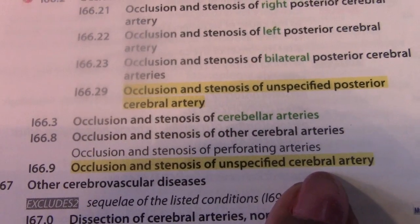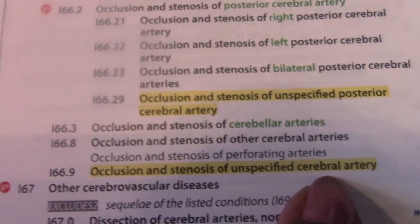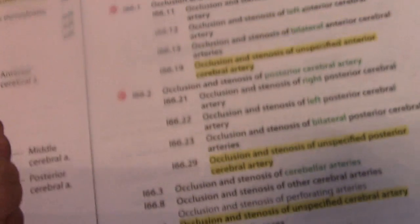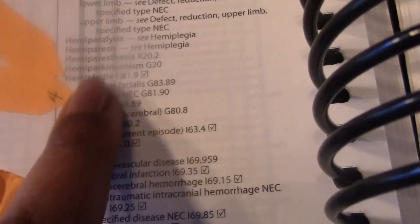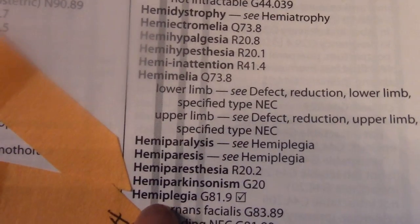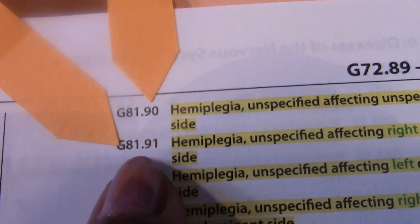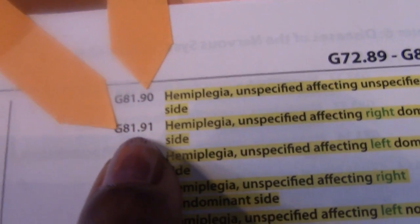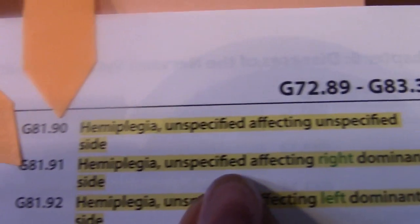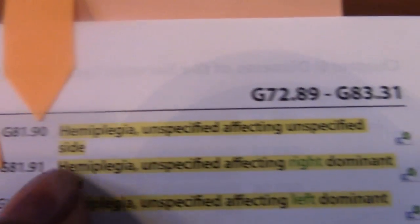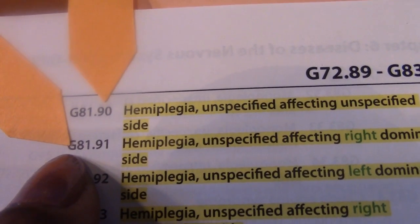It said with transient right hemiplegia that has cleared up by discharge, but remember — if the patient has it, we code it even if it has cleared by discharge. So we go to main term hemiplegia, and it shows G81.9. Confirming at G81.9 in the tabular: right hemiplegia, right dominant side — that's G81.91. So number one should be I66.9 and G81.91.